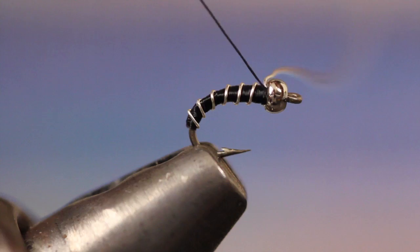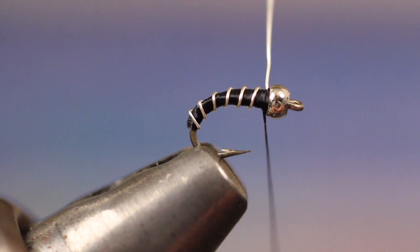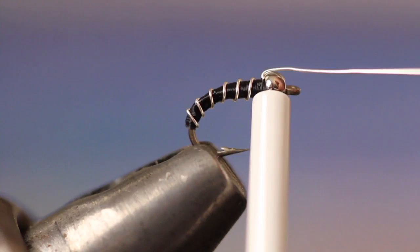When you get to the bead, take nice tight wraps both in front of and behind the wire to secure it. Run your bobbin nozzle all the way up to the fly to brace it and helicopter the wire to break it off clean.